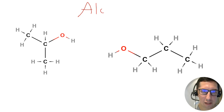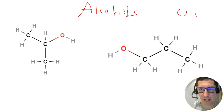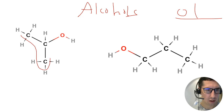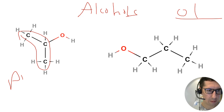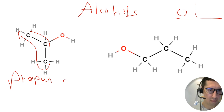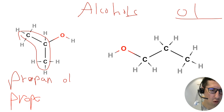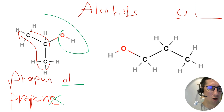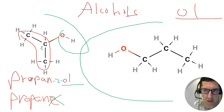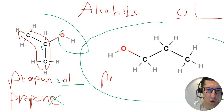Now alcohols. Alcohols have the ending O-L. Find the longest chain — three carbons: propan. There are no double bonds. We drop the final E of 'propane' and replace it with 'ol'. The alcohol group is on carbon one, so this is propan-1-ol.